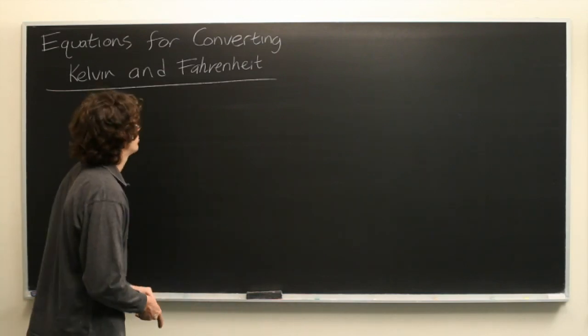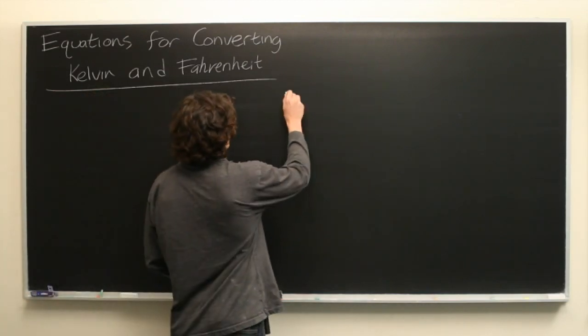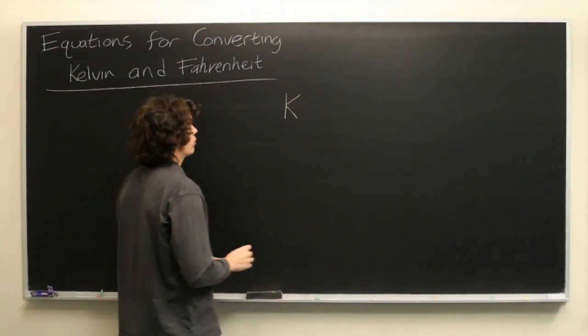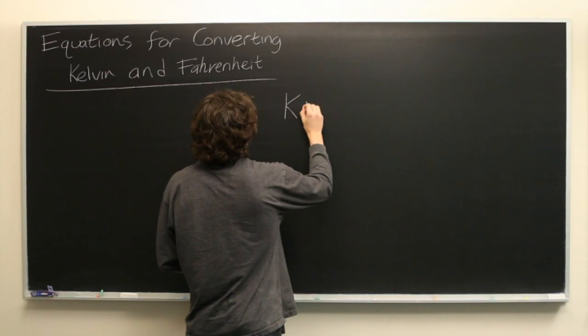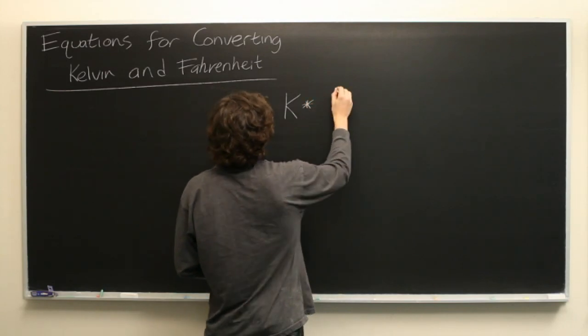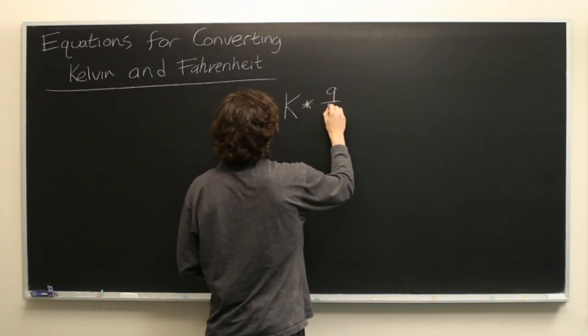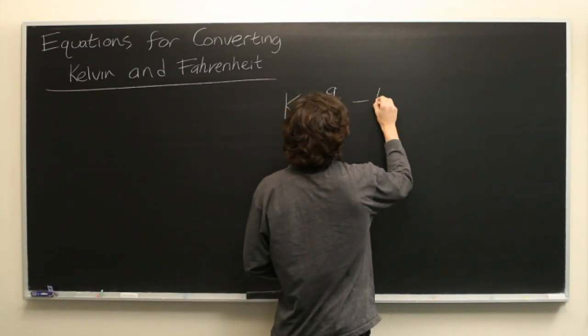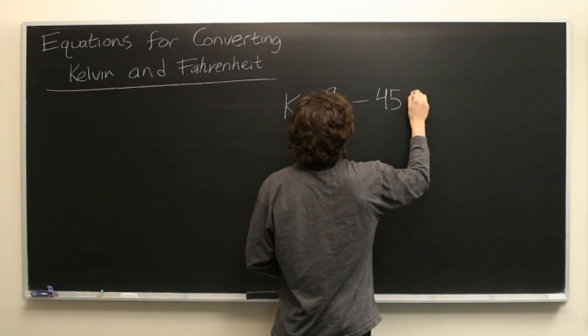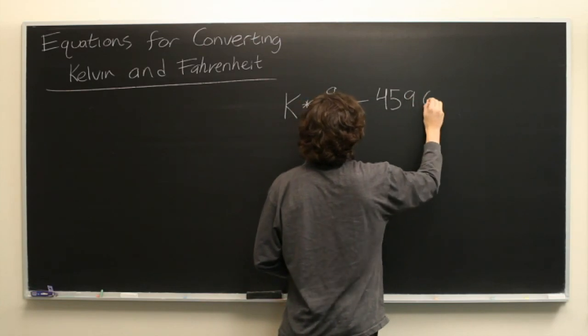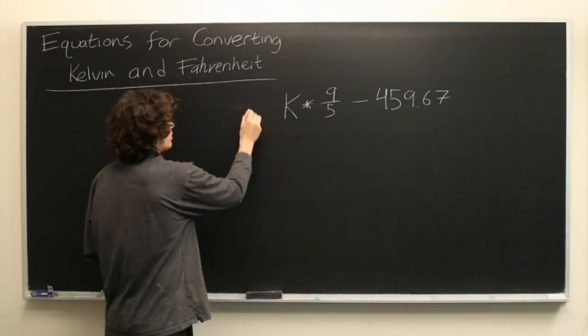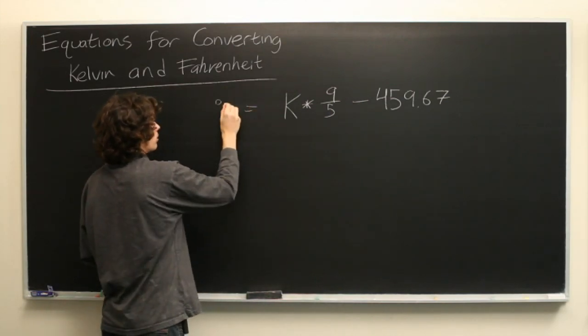So to start off, let's assume that we know the temperature in Kelvin and we want to try to convert it into Fahrenheit. In order to do this, first we multiply by a factor of 9 over 5 and then we subtract 459.67. That will give us our degrees Fahrenheit.